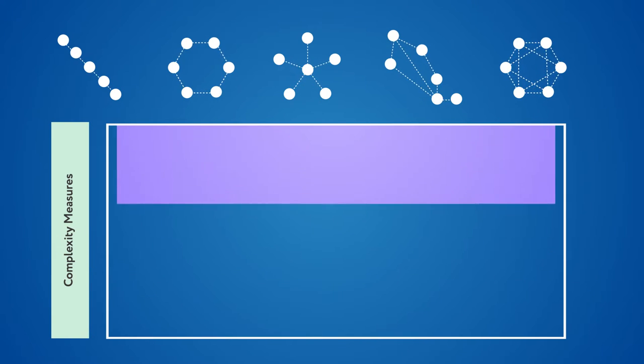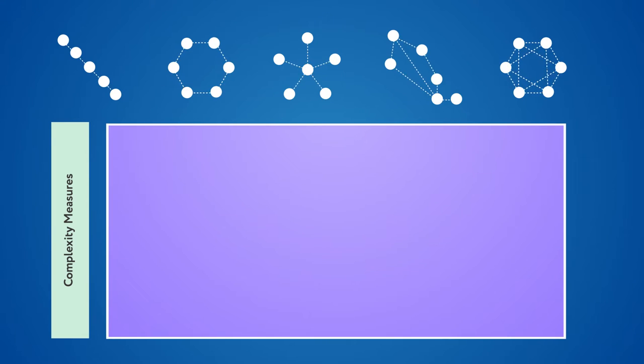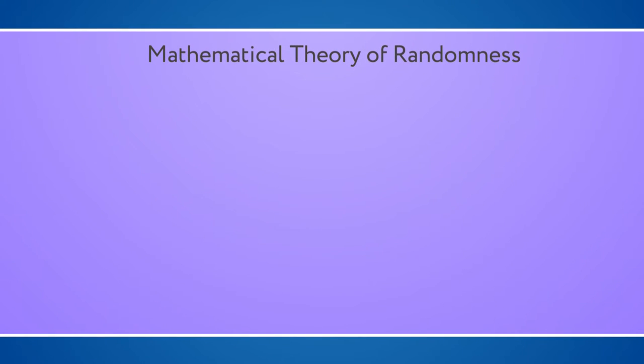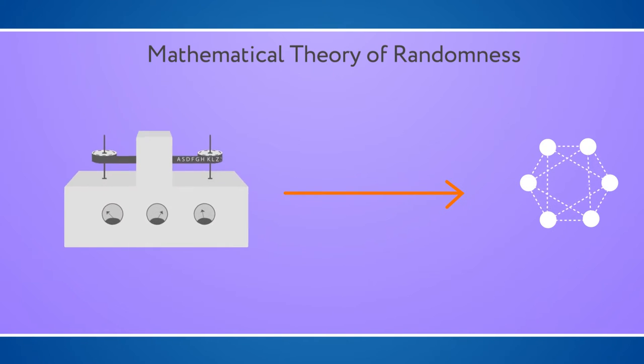We have introduced a robust method to measure graph complexity based upon the accepted mathematical theory of randomness. This measure of complexity is based on the probability that a graph can be produced by a random computer program.